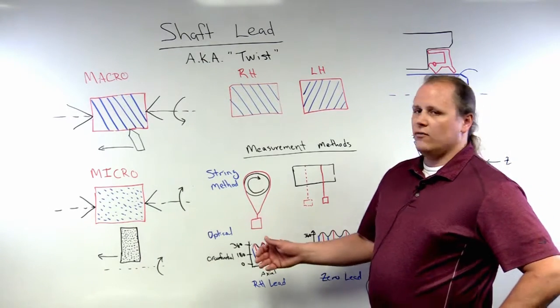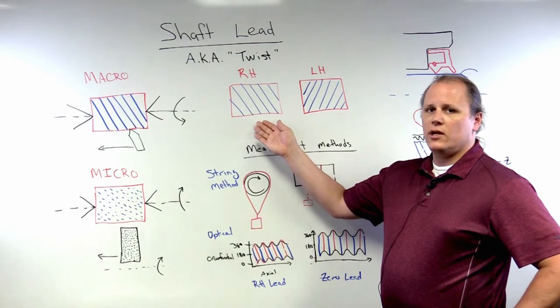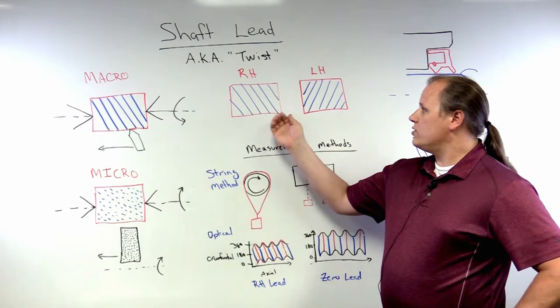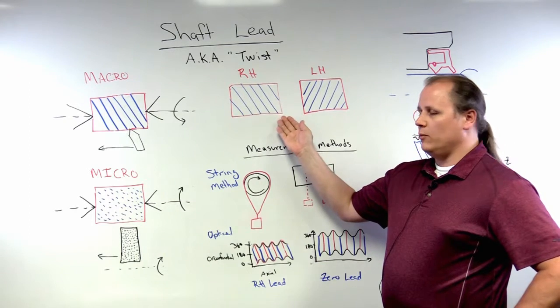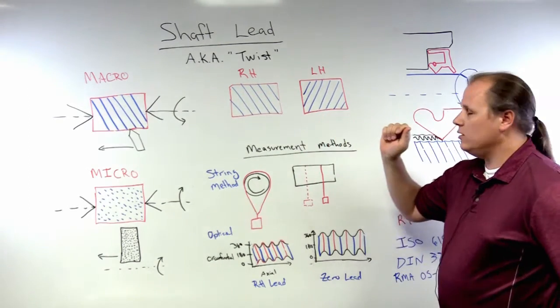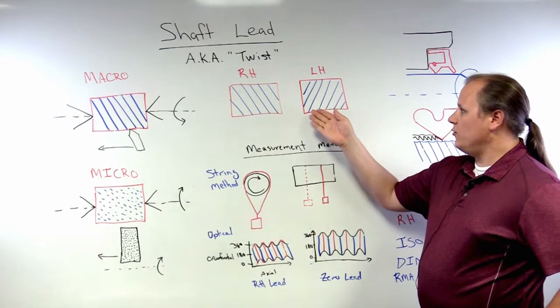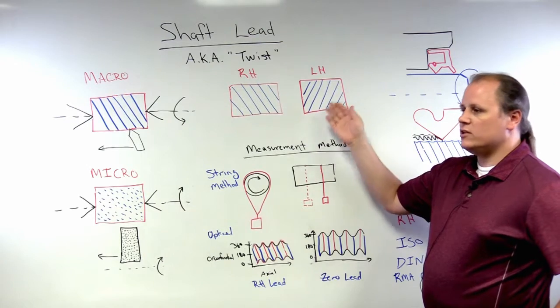Shaft lead can have two orientations. It can be a right-hand orientation where it's shown here moving from the bottom right to the top left corner of the image, and left-hand lead where the thread-like pattern is from the bottom left to the top right.